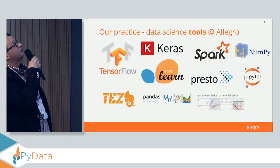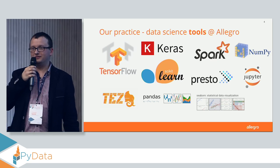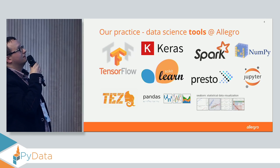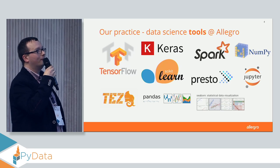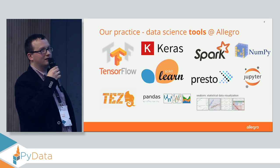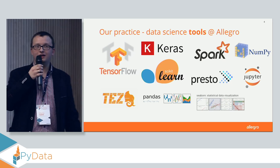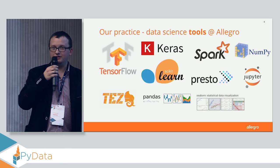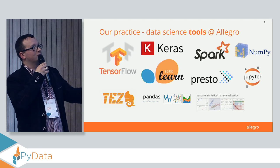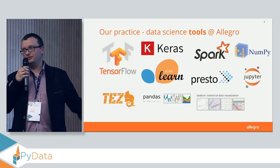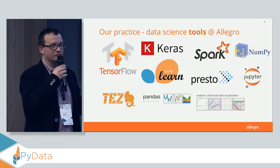These are our data science tools at Allegro. We use Python a lot, scikit-learn, TensorFlow and Keras for machine and deep learning. To transform and query our huge data warehouses, we use Spark, PySpark, and Presto, which is a very fast in-memory query engine. And we use Jupyter notebooks to share code, experiment with data, and do analytics.